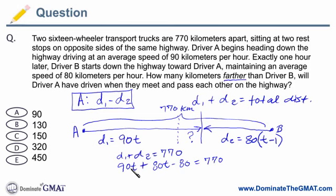And of course, we can combine 90T plus 80T to get 170T. And then of course, add the 80 to both sides. So on the right side of the equation, now we have 850 kilometers. And so of course, we divide by 170. And we end up that T time is 850 divided by 170, which is just five or five hours. So we have solved for time, which is helpful.